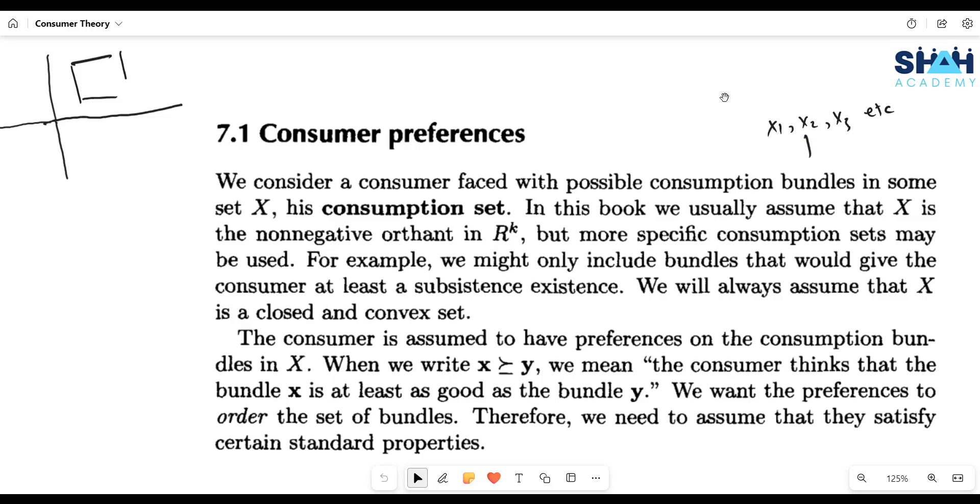For example, if the consumer wants to purchase two commodities, something like ghee and meat, so different bundles are possible for ghee and meat. For example, x1, x2, and x3, these are three different bundles. The bundles can be more than 3, 4, 5, so many bundles are possible. So these are the different possible bundles and these possible bundles belong to some consumption set, and the consumption set is denoted by X.